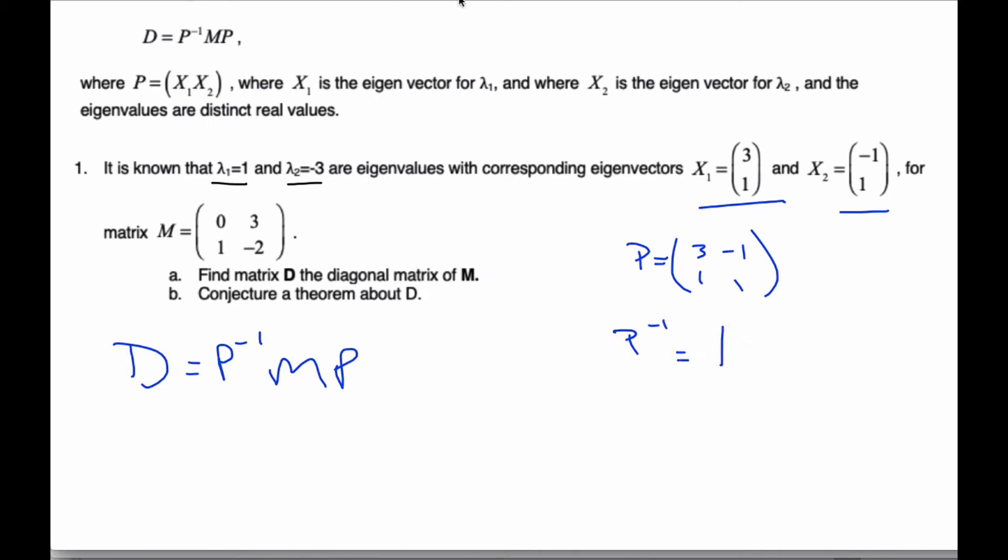And so when we do the inverse formula, we have to recognize that we are going to take our values, switch our 1 and our 3, and change the sign on these values here. And I have to multiply by 1 over the determinant. And the determinant is going to be 3 times 1, subtract 1 times negative 1. So that is 4. So it's 1 divided by 4. So this is the entire inverse of P.